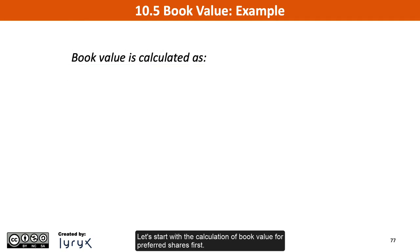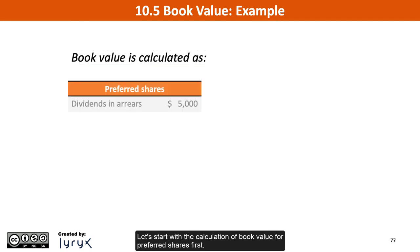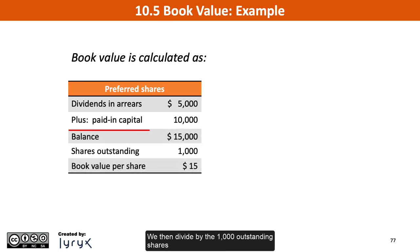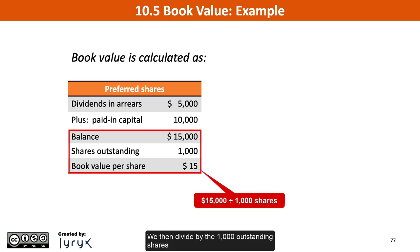Let's start with the calculation of book value for preferred shares first. This example includes $5,000 of dividends in arrears, which we add to the paid-in capital balance of $10,000 for a total of $15,000. We then divide by the 1,000 outstanding shares to end up with a book value per preferred share of $15.